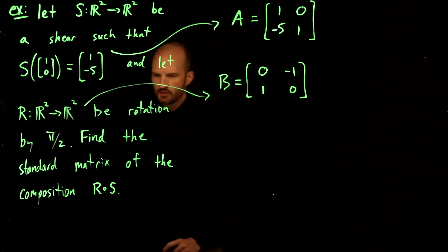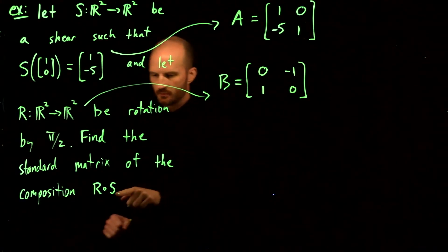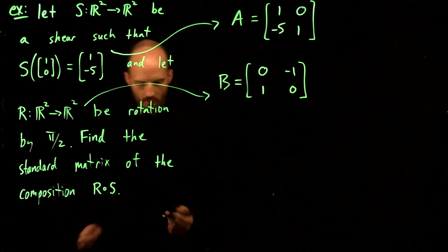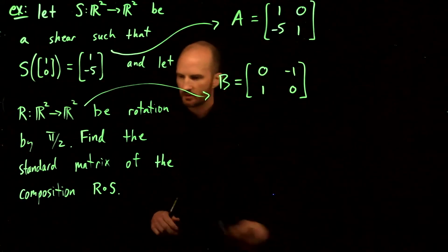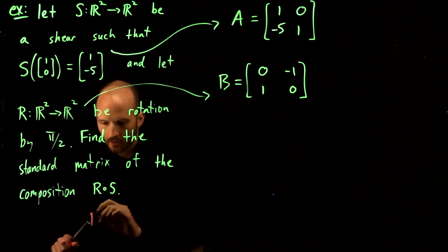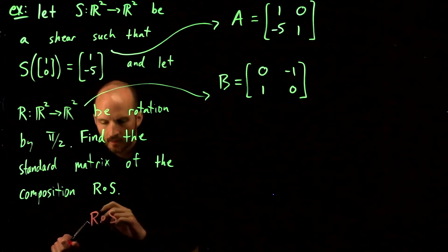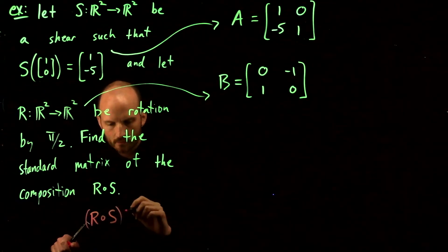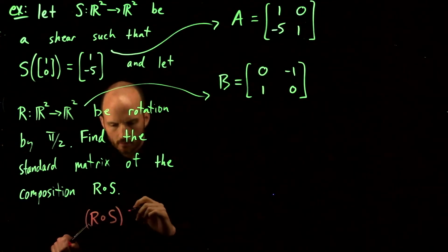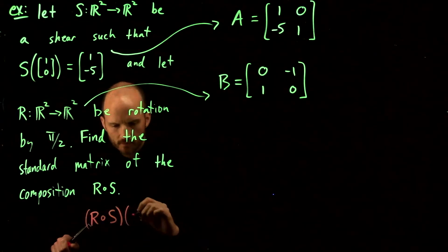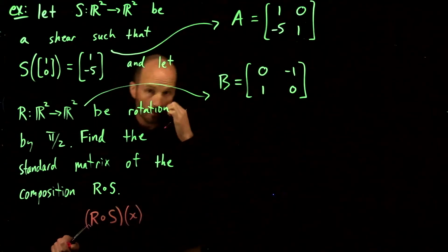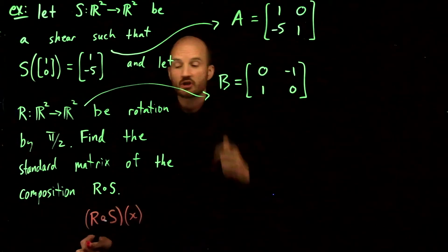We're going to find a composition, the composed transformation. What do I mean by a composed transformation? We have R composed with S. We did composed functions in Cal 1 when you were looking at the chain rule.